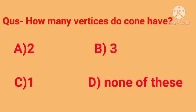Today's question is: how many vertices does a cone have? A) 2, B) 3, C) 1, D) None of these. The right answer is option C. A cone has 1 vertex. Now, you have to make these shapes at home and count their faces, edges and vertices. Thank you.